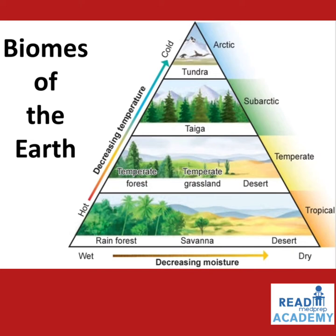At the base you can see the rainforest which is wet, then the savannah, then the desert which is dry. All three are tropical biomes. In the temperate biomes you can see the temperate forest, the temperate grassland and the desert. In the subarctic regions you can see the taiga, and in the arctic regions you can see the tundra, which is the coldest part of the earth.